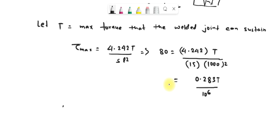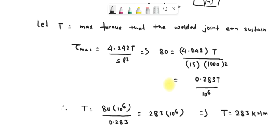Therefore, the maximum torque T equals 80 times 10 raised to the power 6 divided by 0.283. T equals 283 kilo-Newton millimeters, and this is the required answer.